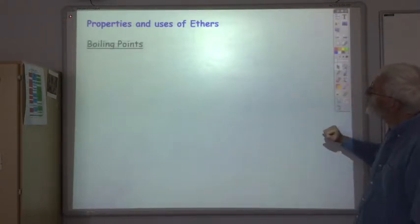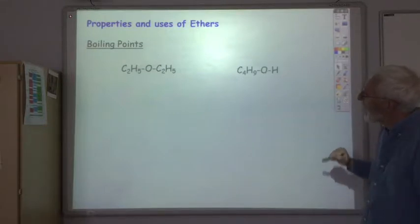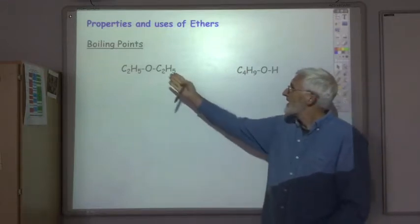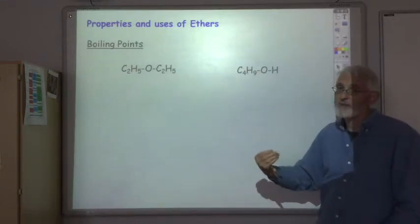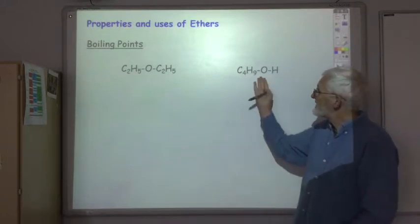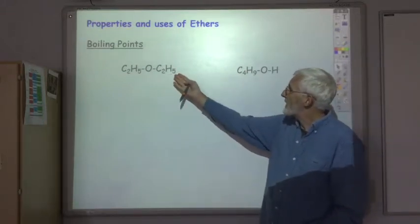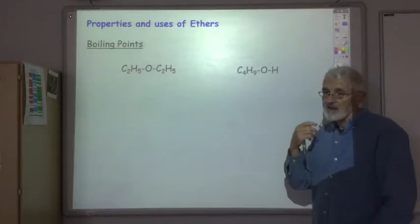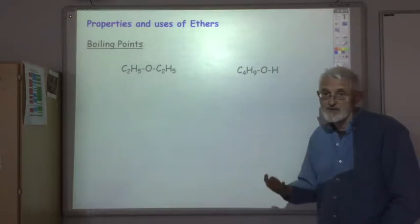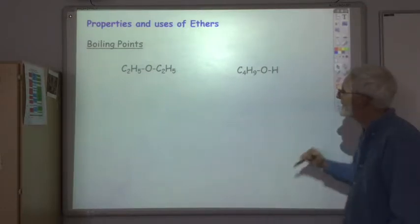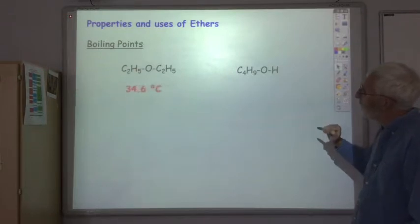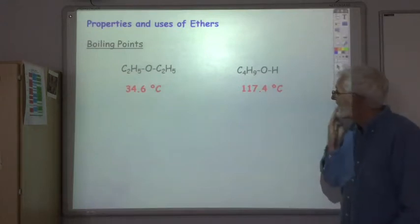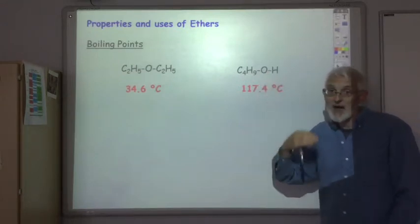So boiling points. One thing that comes up quite a lot in exams is they always make the point that ethers and alcohols are very often isomeric, so both these compounds are C4H10O. So in terms of London dispersion forces you expect them to have the same boiling point with the exact same mass, but the boiling point of the ether is an awful lot less than the boiling point of the alcohol, and that is of course because the alcohol has got hydrogen bonding.